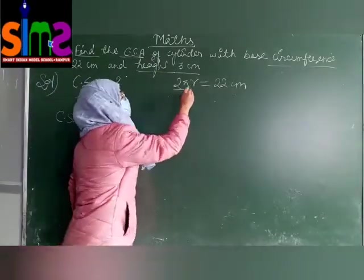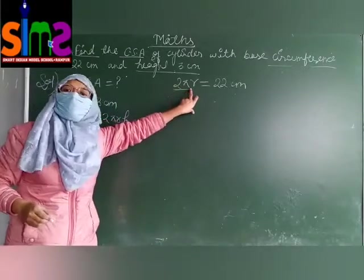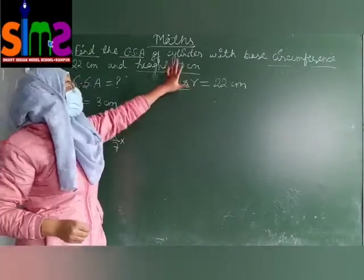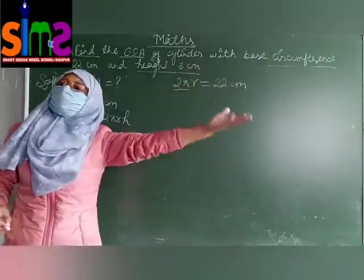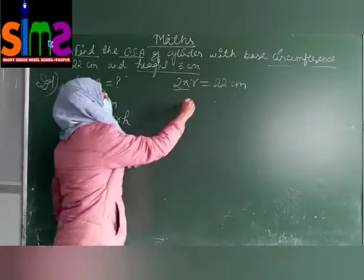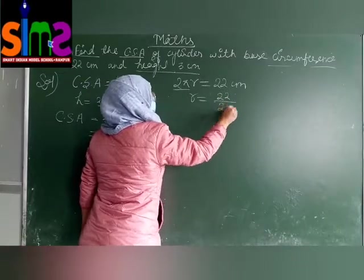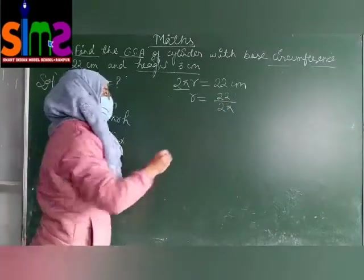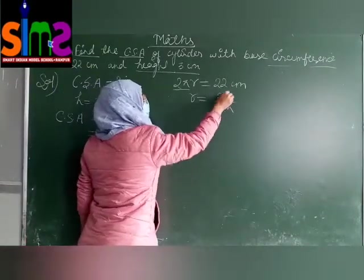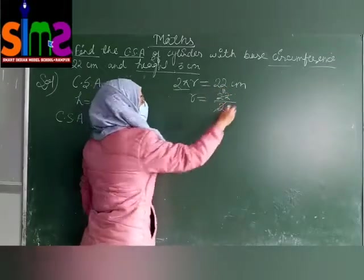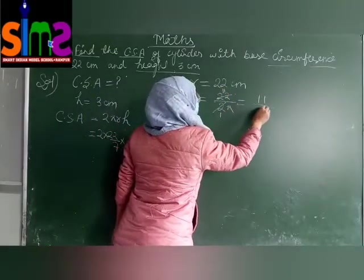As you can see that this 2 pi is in the multiplication form with r. So when you shift it from left to right, it will become divide. So the value of r will be 22 upon 2 pi. Divide it. 2 once are 2. You will get 11 upon pi.